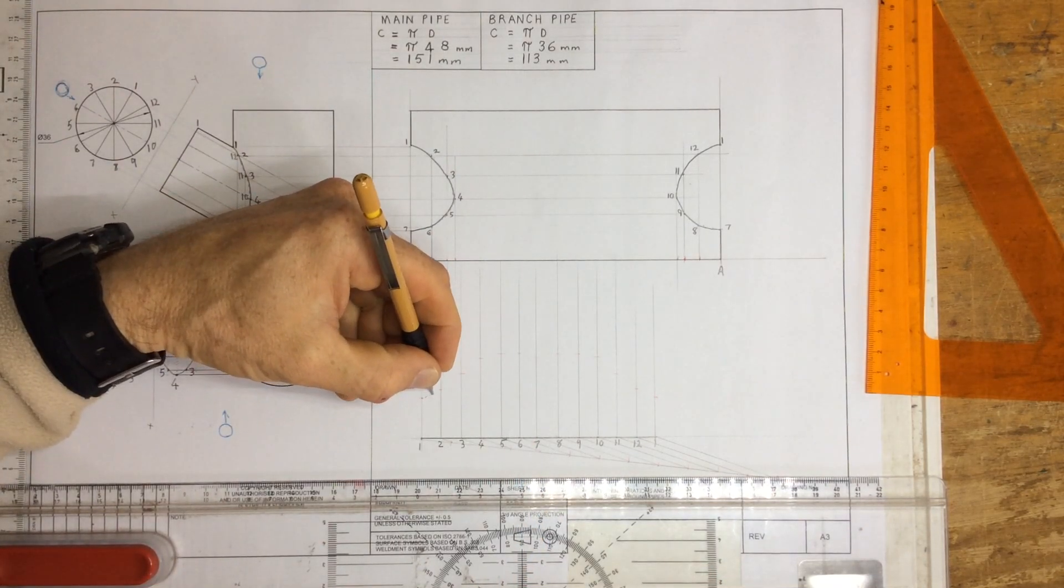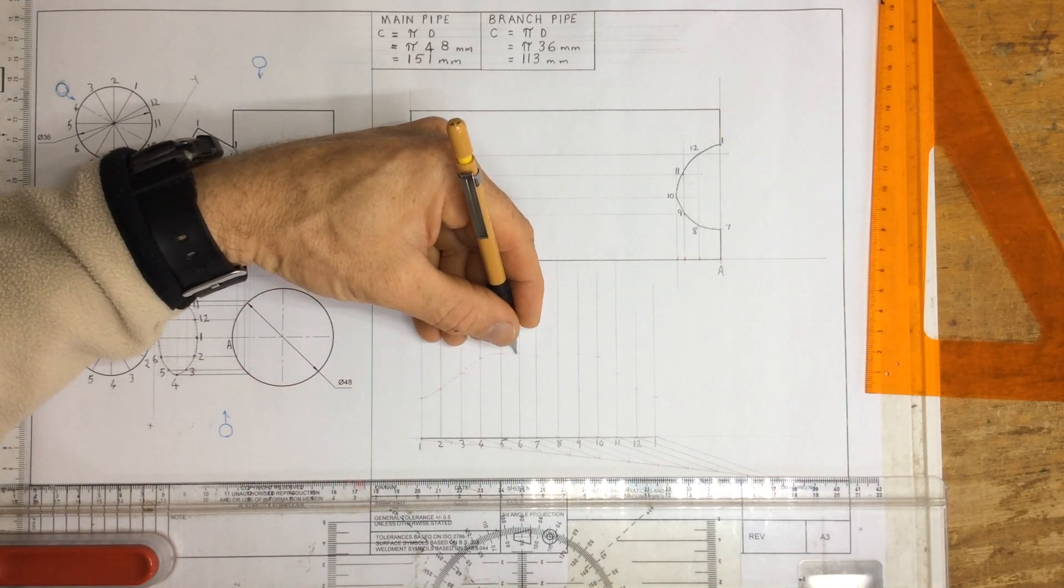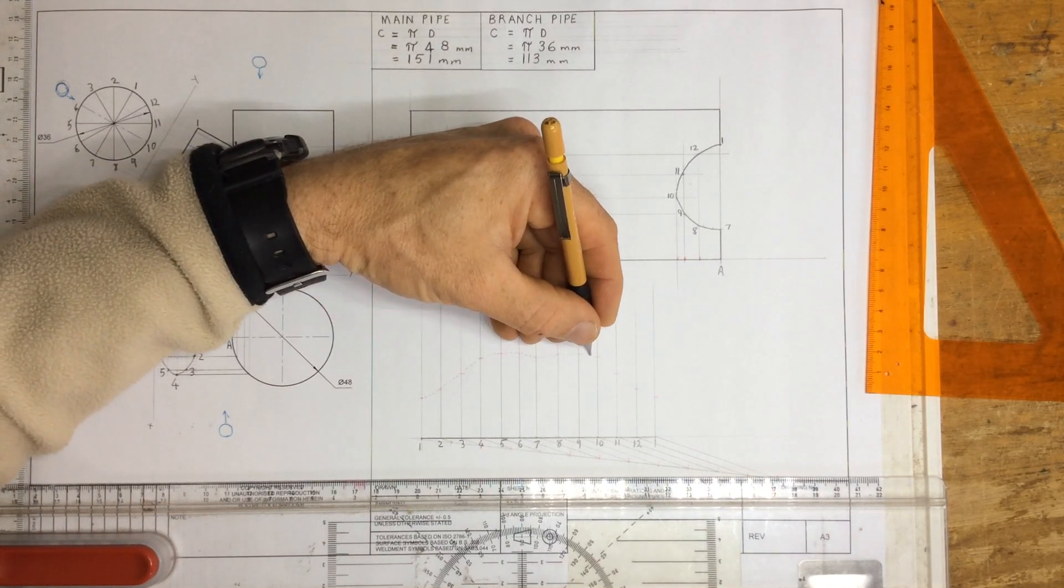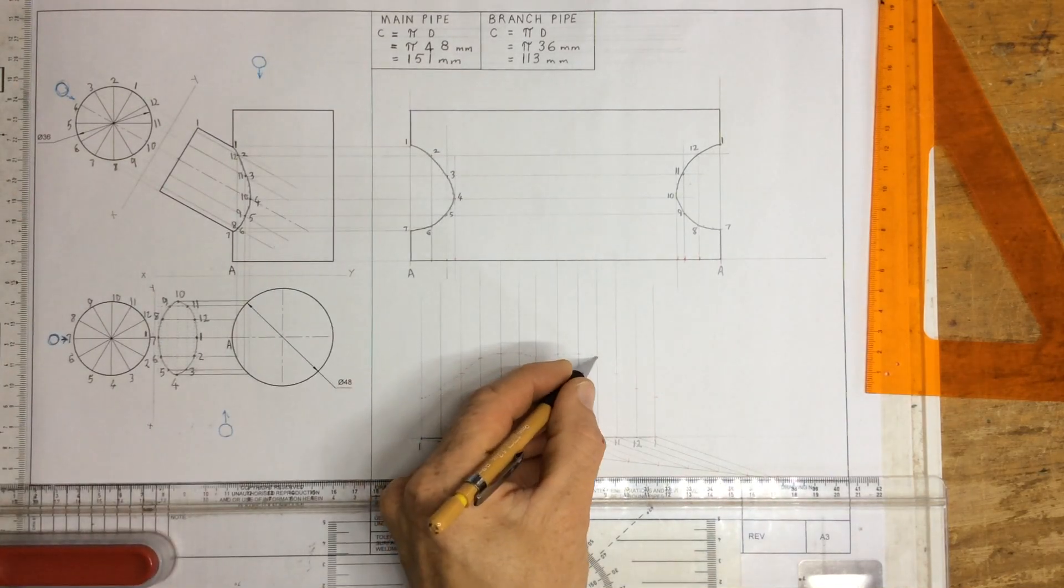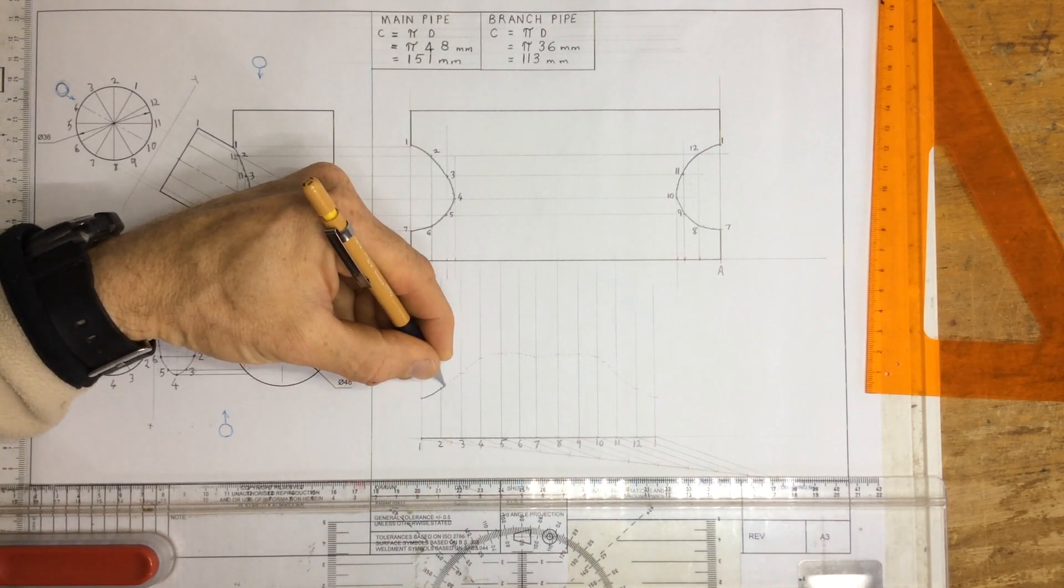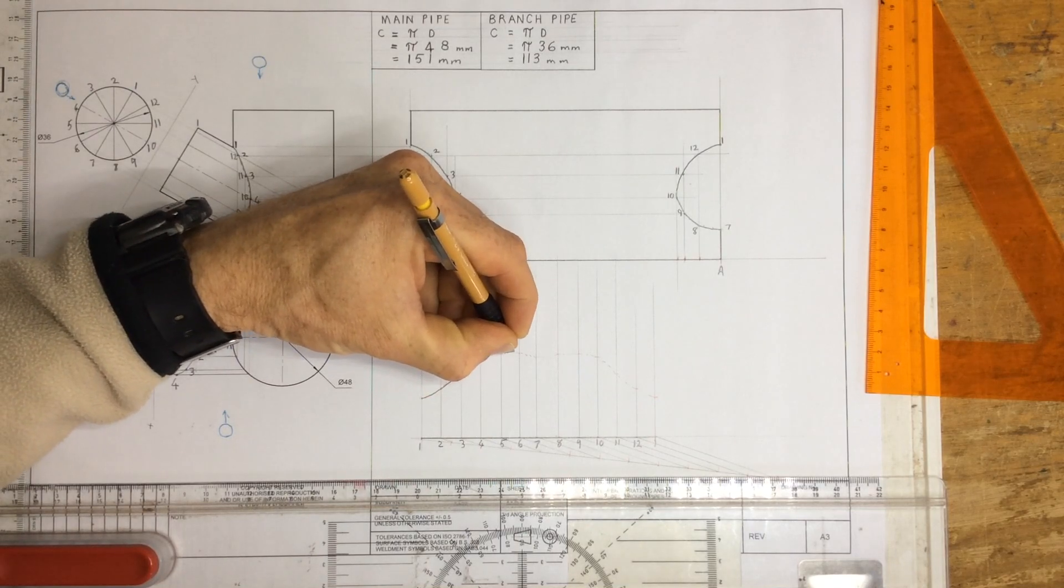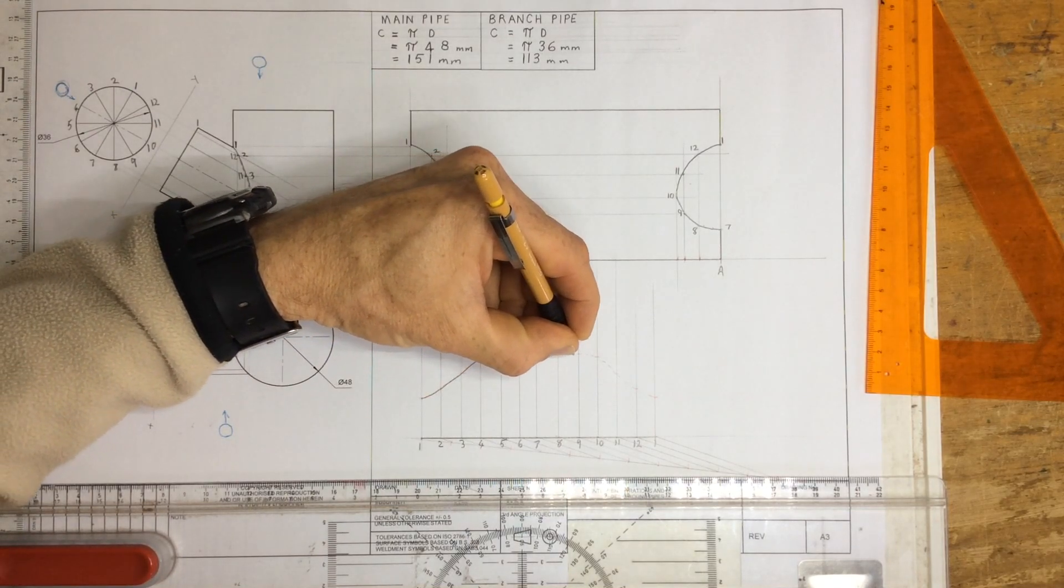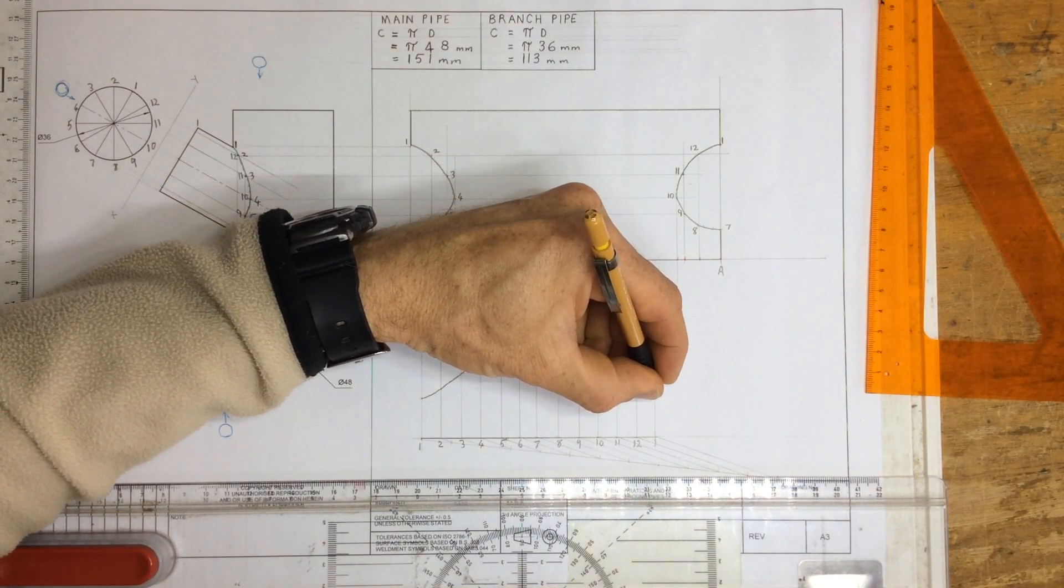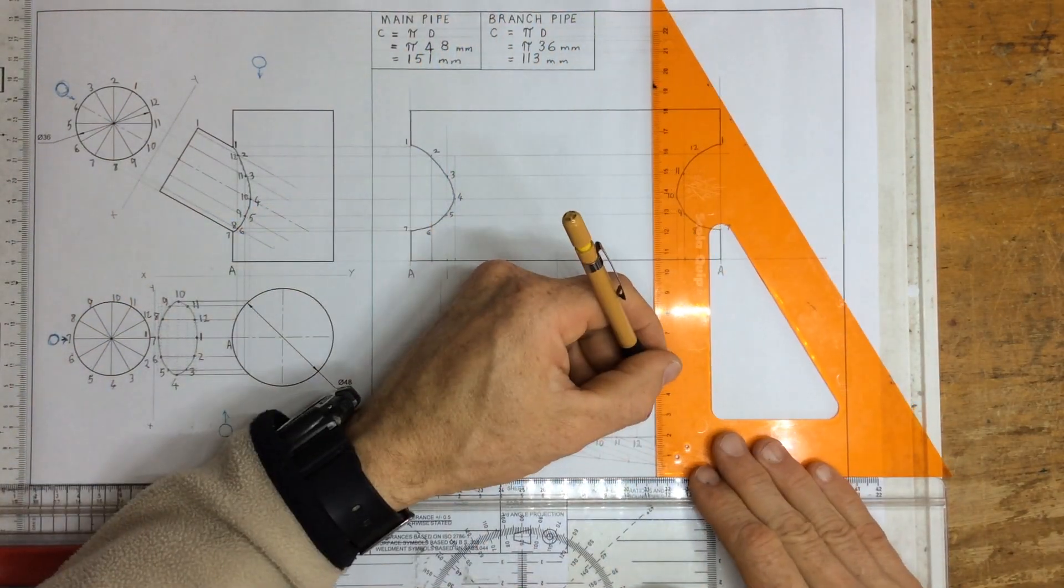I can link them up with a nice curve going around like that. Going in there, going down, going up, going across there, going down. Once I've got that little guideline, I can then draw in my curve nice and dark, just a nice freehand curve going in there. There we go, and I can draw in that and that.